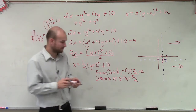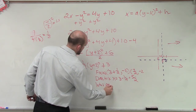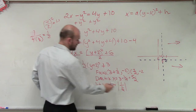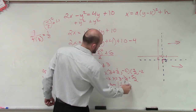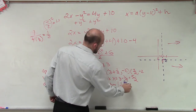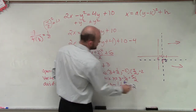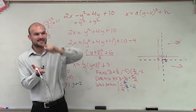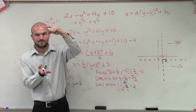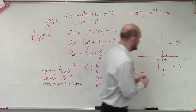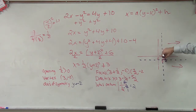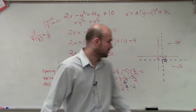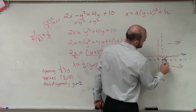Now let's determine what our latus rectum is. So our latus rectum, remember, is 1 over a, which is 1 over one-half. When you divide by a fraction, that's the same as multiplying by its reciprocal, so it equals 2. Therefore, if the total distance from point to point going through the focus, perpendicular to the axis of symmetry, is 2, then the distance from the focus to one point is 1. So if I go to negative 2, the next point up from the focus is going to be at negative 1, and this one's going to be at negative 3.